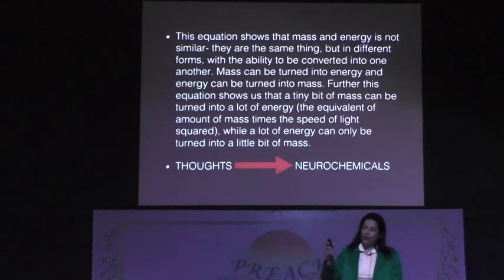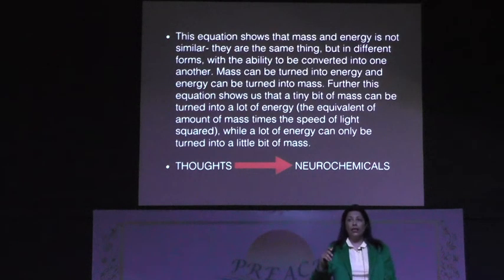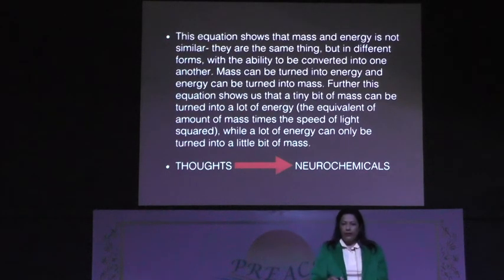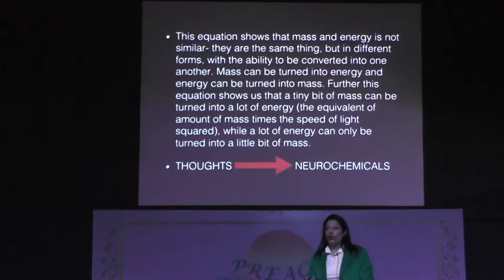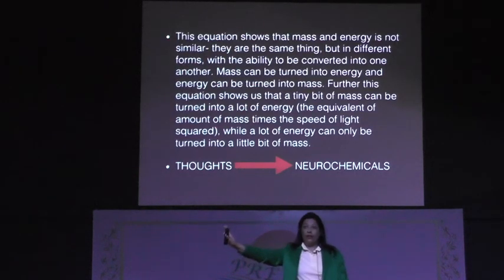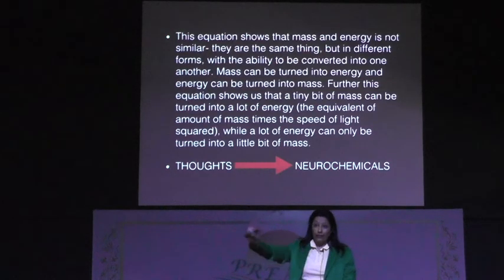Energy and matter may constantly change. This is a continuous process — metabolism, wave working here. Mass can be turned into energy and energy can be turned into mass. This equation shows us that a tiny bit of mass can be turned into a lot of energy. Matter is 0.0001% mass, and 99.9999% is energy.